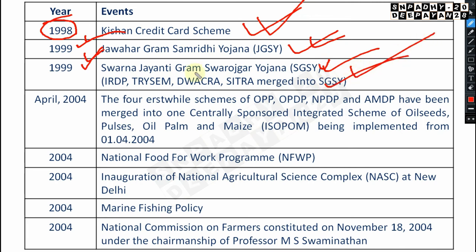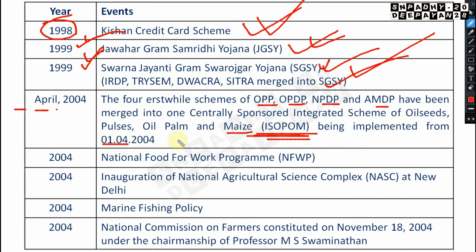In April 2004, four erstwhile schemes — OPPD, OPDP, NBDP, and AMDP — were merged into one centrally sponsored integrated scheme: ISOPOM — Integrated Scheme of Oilseeds, Oil Palm, and Maize — implemented from 1st April 2004. In 2004, the National Food for Work Program (NFWP) was also launched.